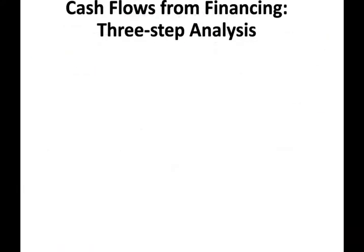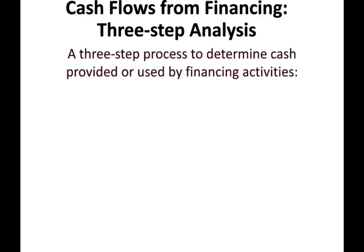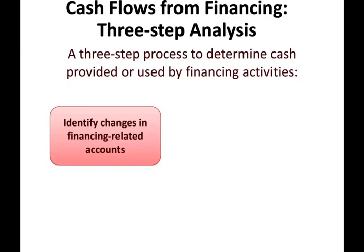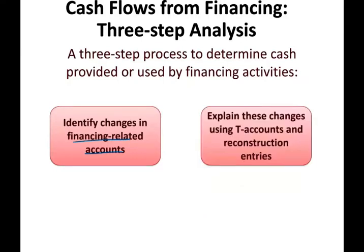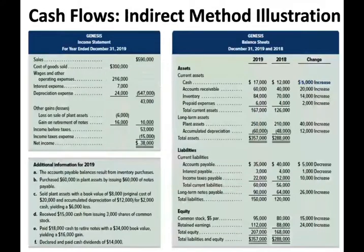To analyze the financing section, we follow a three-step approach, just like the investing section. First, we identify the changes in the related accounts. We explain those changes in a T-account and restructure the journal entries. Then we report the cash flow effect. We're going to be looking at the same data that we used for the operating and investing sections.